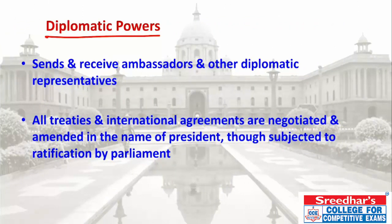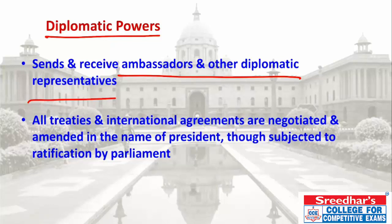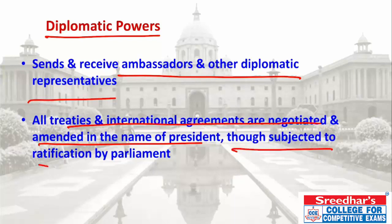Regarding diplomatic powers, the President receives ambassadors and diplomatic representatives from other countries. India's ambassadors to other countries are also appointed in the name of the President. Treaties and international agreements — even negotiations conducted by the Prime Minister, External Affairs Minister, or other ministers — are done on behalf of India and carried out in the name of the President.